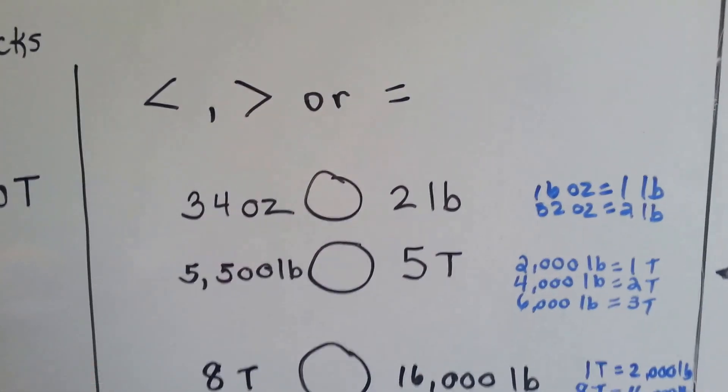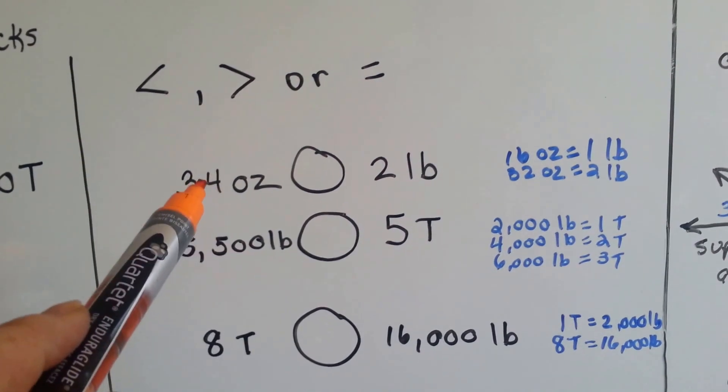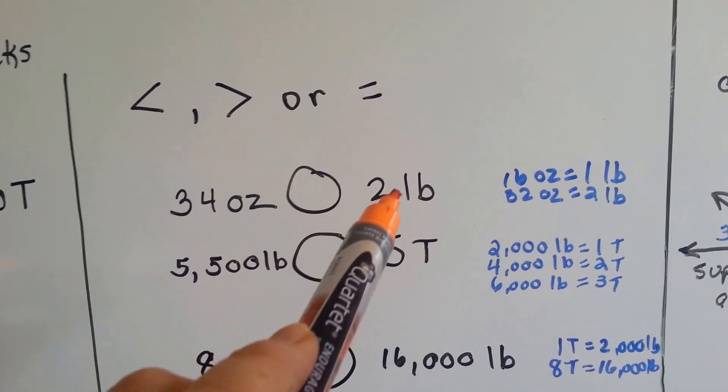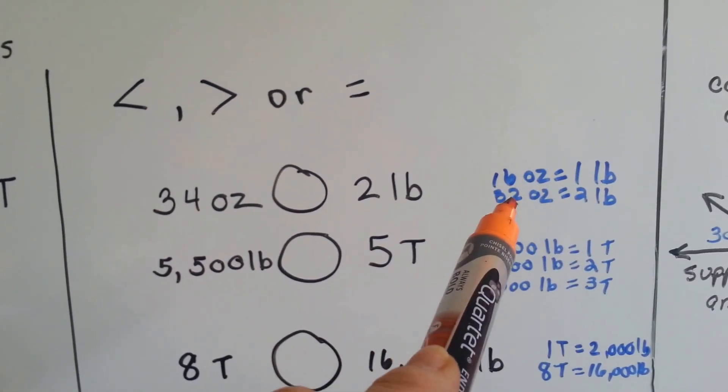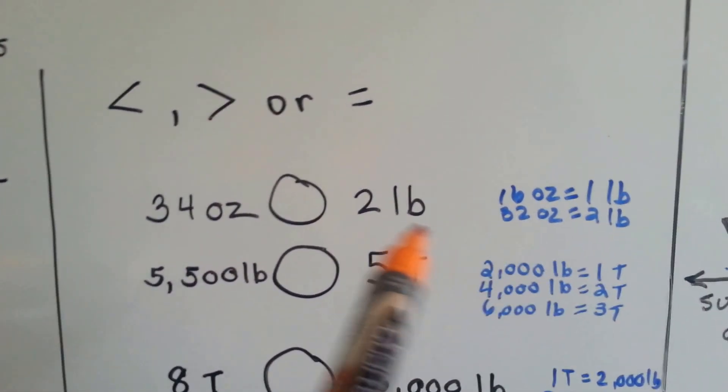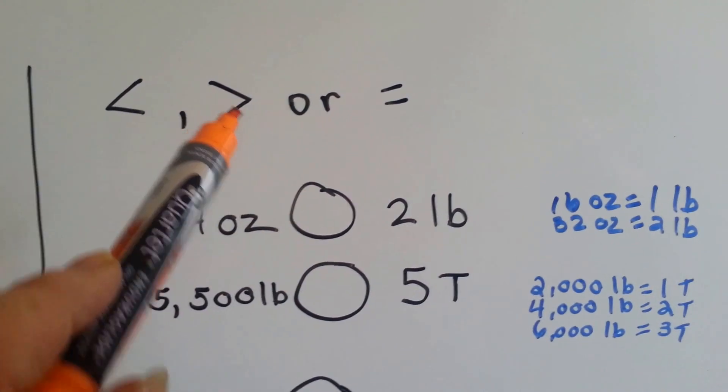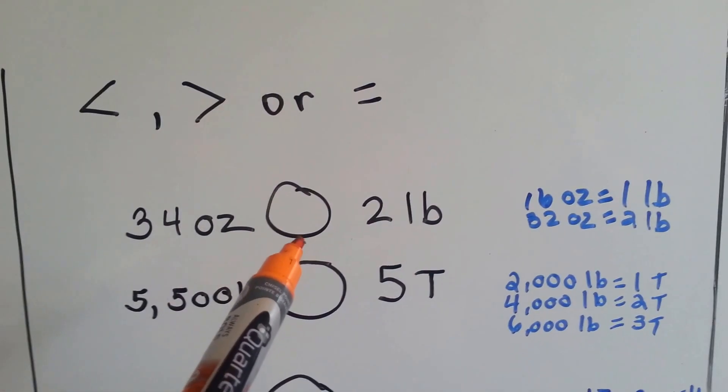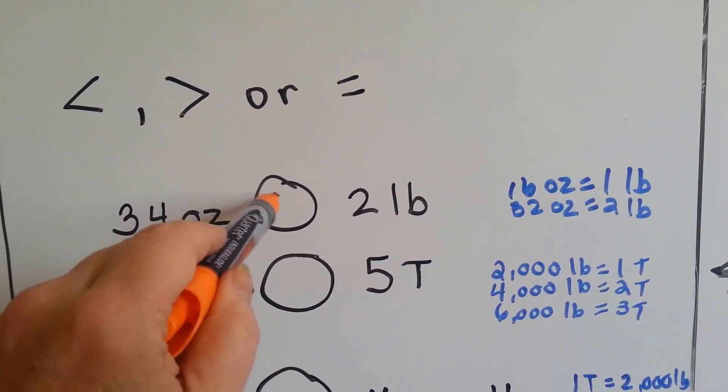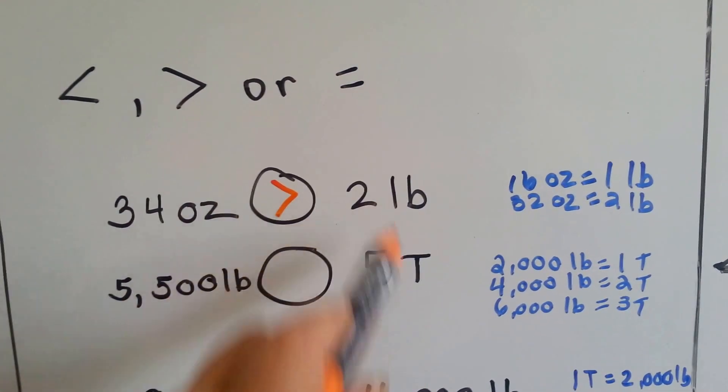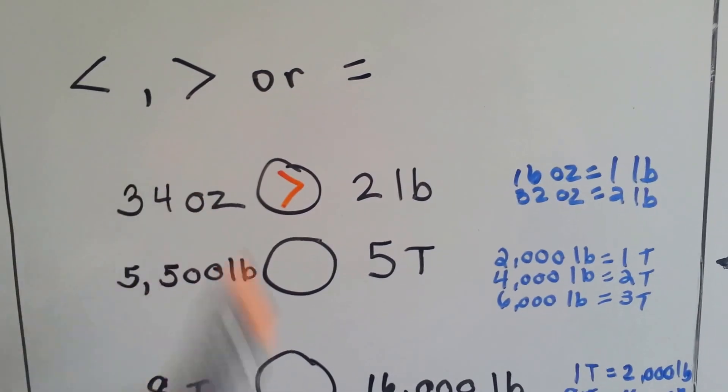So now we have less than, greater than, or equal to. 34 ounces or 2 pounds? Well, 16 ounces is 1 pound, so that means 32 ounces is 2 pounds. So which way should our sign go? Which is greater, the 34 ounces or the 2 pounds? If you said the 34 ounces, you're correct. Because 32 is equal to 2 pounds, we've got 2 ounces more.